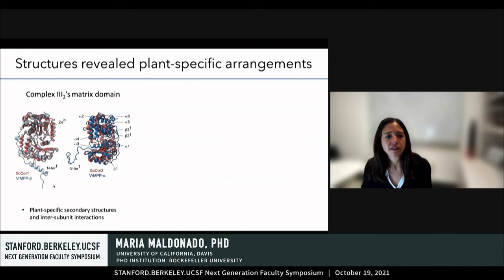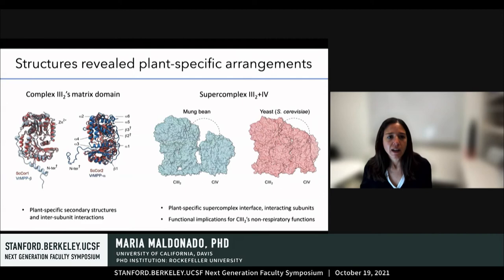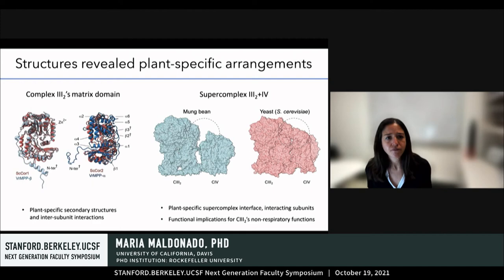Additionally, the structures revealed several plant-specific arrangements, including new helices and beta sheets in complex three's catalytic matrix domain, as well as a plant-specific interface between complex three and complex four in the super complex. Comparing the regions encircled in dashes, you can see very large differences between yeast and plants, and we hypothesize that these differences have functional implications for the plant super complex and complex three activity.